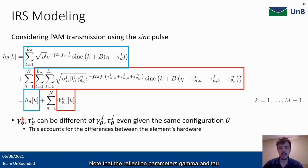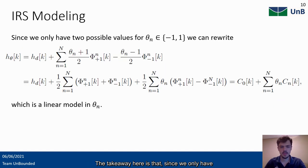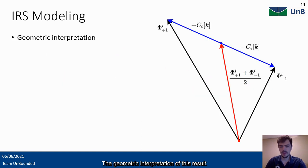Note that the reflection parameters gamma and tau of each element can be different, even given the same configuration theta. This accounts for the differences between the elements hardware. The takeaway here is that since we only have two states, we can rewrite this expression and obtain an expression linear in theta n. The geometric interpretation of this result is that we can switch between two different channel responses from the same element by using the average vector of these two responses and another vector that can either be summed or subtracted in order to perform this switching.